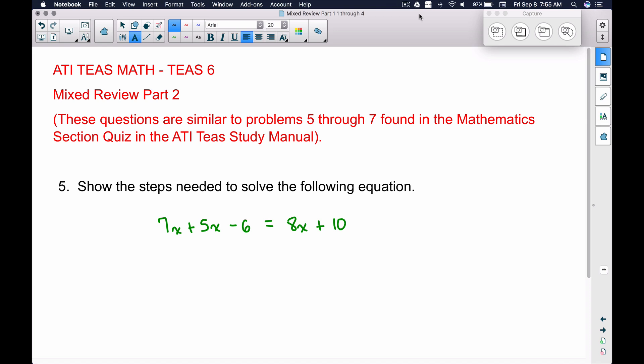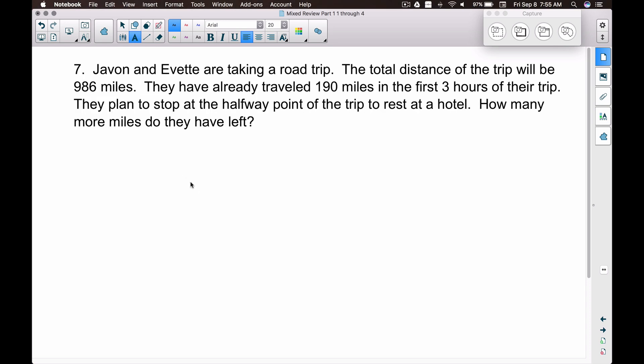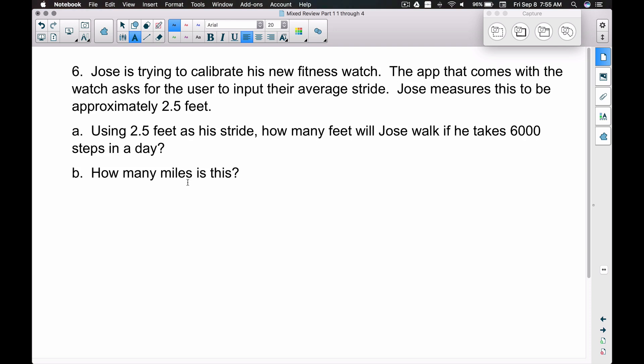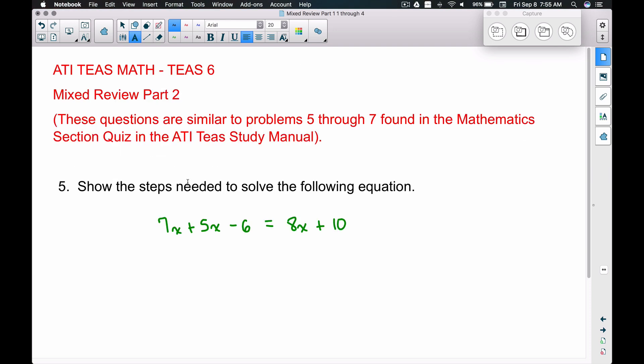Alright, in this video we're going to look at the ATI TEAS Math Mixed Review Part 2 for the T6. These questions are going to be similar to problems 5 through 7 found in the mathematics section quiz in the ATI study manual. So maybe you've already worked through the mathematics section quiz and you want some similar questions. Well here we go. Here's number 5 and then number 6 and number 7.